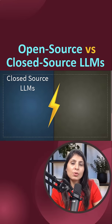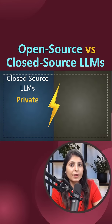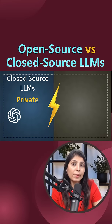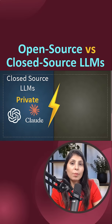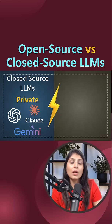Closed source LLMs are built by companies that keep their model weights, training data, and code private. For example, GPT-4 and GPT-5 are closed source LLMs by OpenAI, Claude by Anthropic, and Gemini by Google. So these all are closed source LLMs and you can access them.